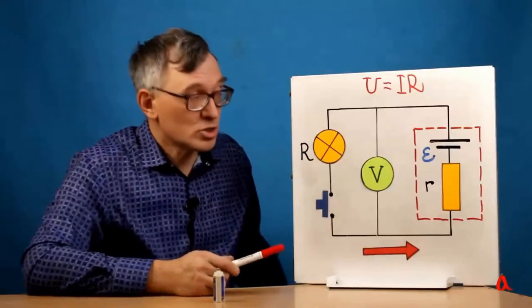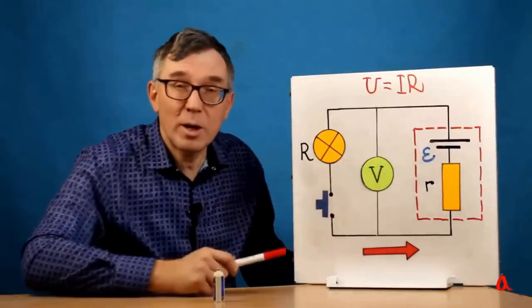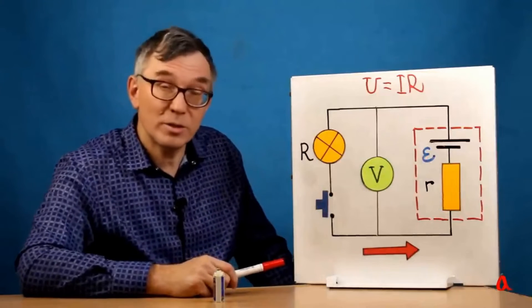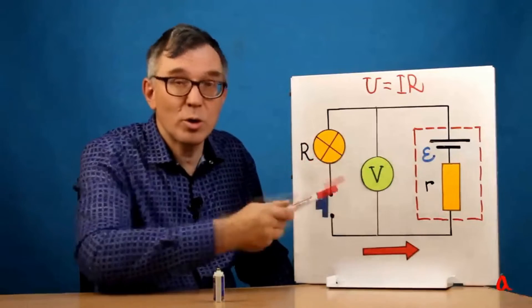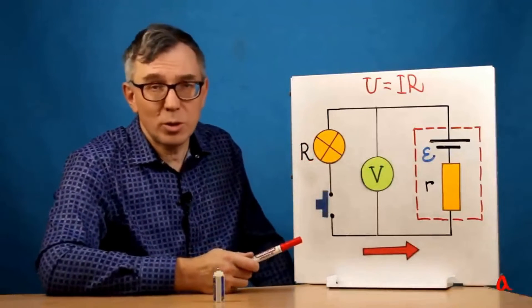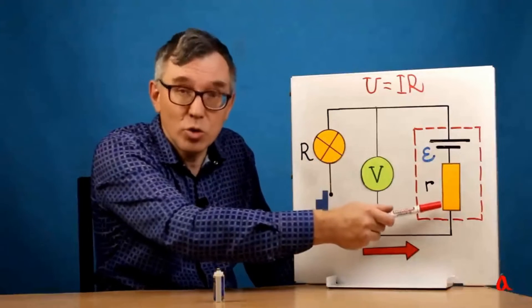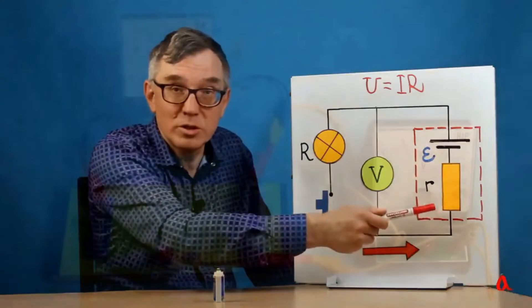And the sum of these voltages is exactly equal to the electromotive force of the battery. And thus it turns out that the voltage on the bulb is lower than the electromotive force. And those same lost 0.7V are dropped on the internal resistance of the battery.